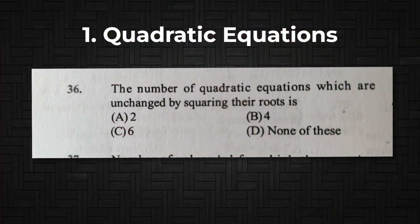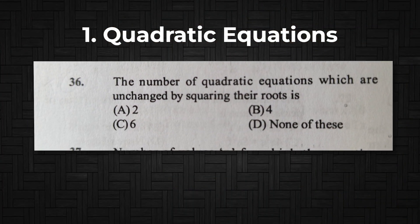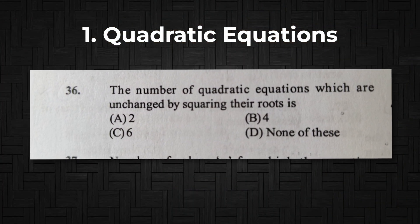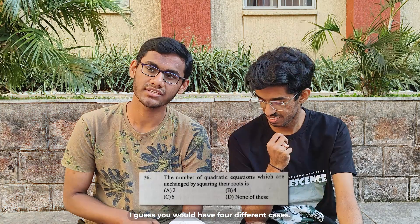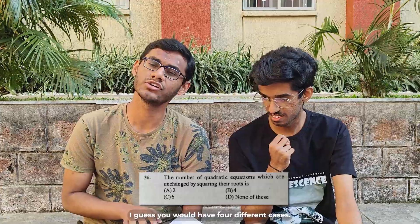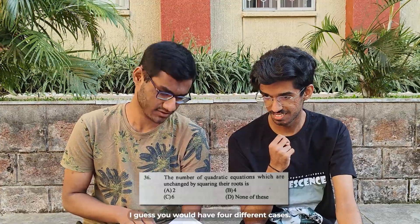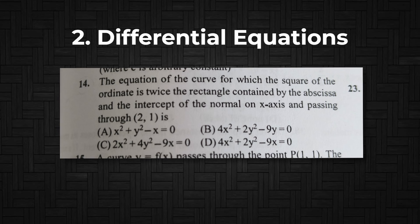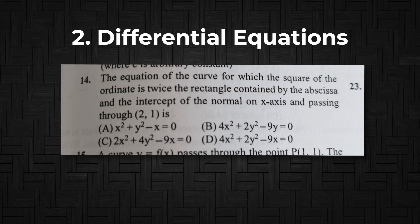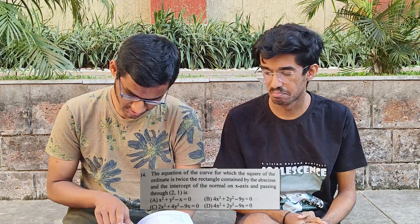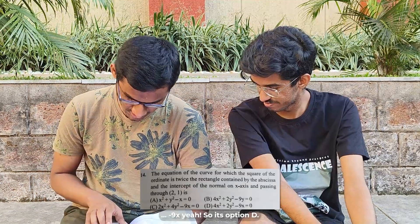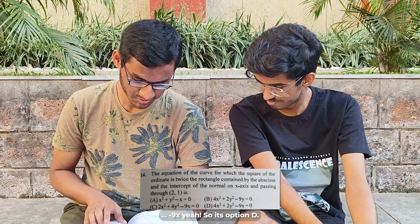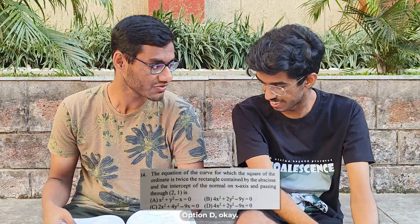The number of quadratic equations which are unchanged by squaring their roots — and then you would have four different cases. I guess four. B. Four. Okay. Let's go to differential equations. The equation of the curve for which the square of the ordinate is twice the abscissa minus 5x. So it's option B.